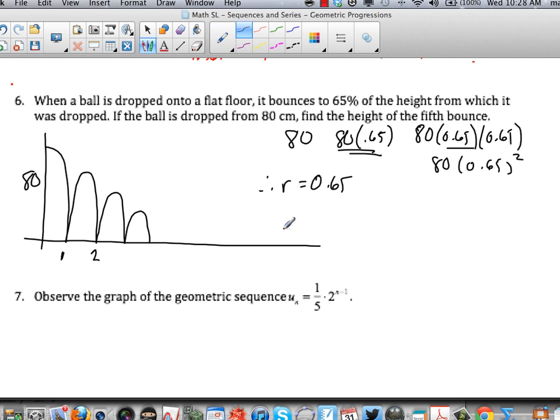So I find U6. What's the formula then? U6 is U1 times R to the power of 5. U1 is 80. Common ratio is 0.65 to the power of 5. And what does that give me please on your calculators? Three significant figures, 9.28, 9.28 centimeters. So the height of the fifth bounce must be 9.28 centimeters.